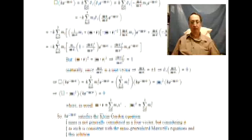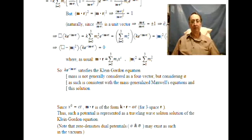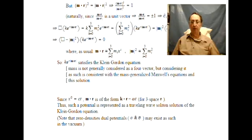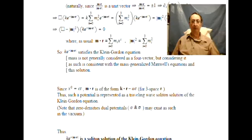Now, since x⁰ equals ct, m·r is of the form k·r minus ωt for three-space r. And thus, such a potential is represented as a traveling wave soliton solution of the Klein-Gordon equation.